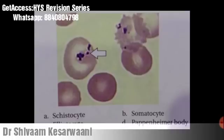This is a very important part — the Pappenheimer body. These are inclusion bodies formed by abnormal granules of iron inside red blood cells seen on routine blood stain. They are formed by phagosomes that have engulfed an excessive amount of iron, forming Pappenheimer bodies. This condition is seen in thalassemia, sideroblastic anemia, and hemolytic anemia.